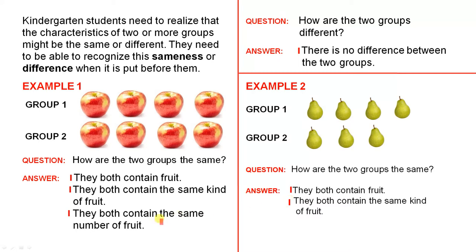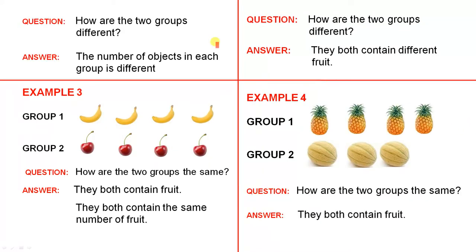Now we can't say the third one. We cannot say they both contain the same number of fruit, because you can see that they don't. Then you can ask: how are the two groups different? They'll very quickly see that the number of objects in each group is different — the first group has 4, the second group has 3. So they're recognising the difference.